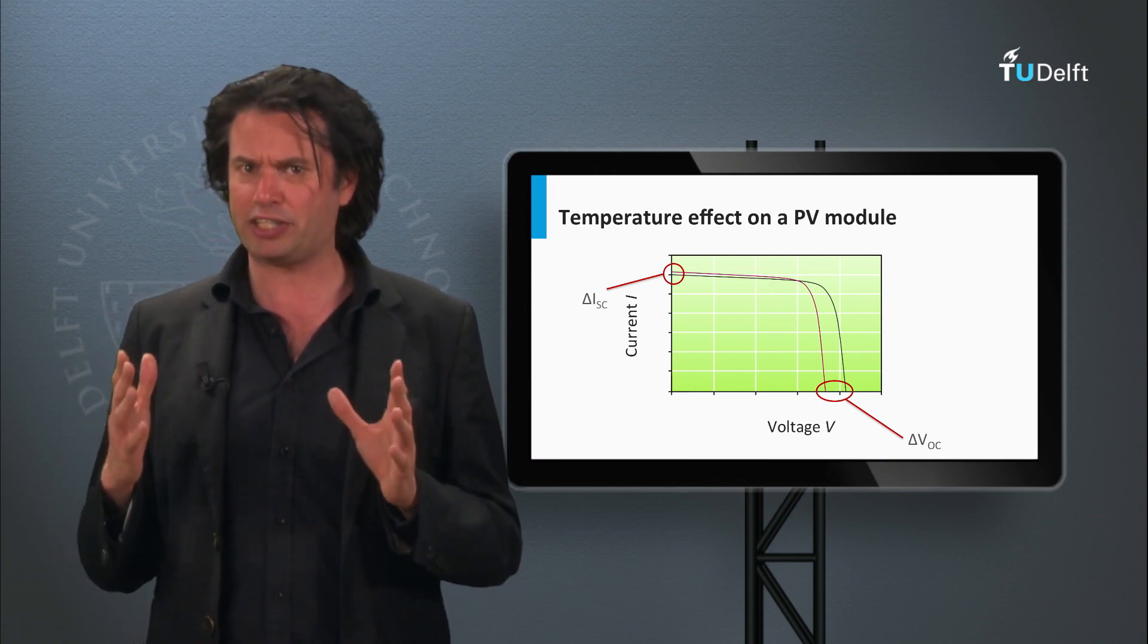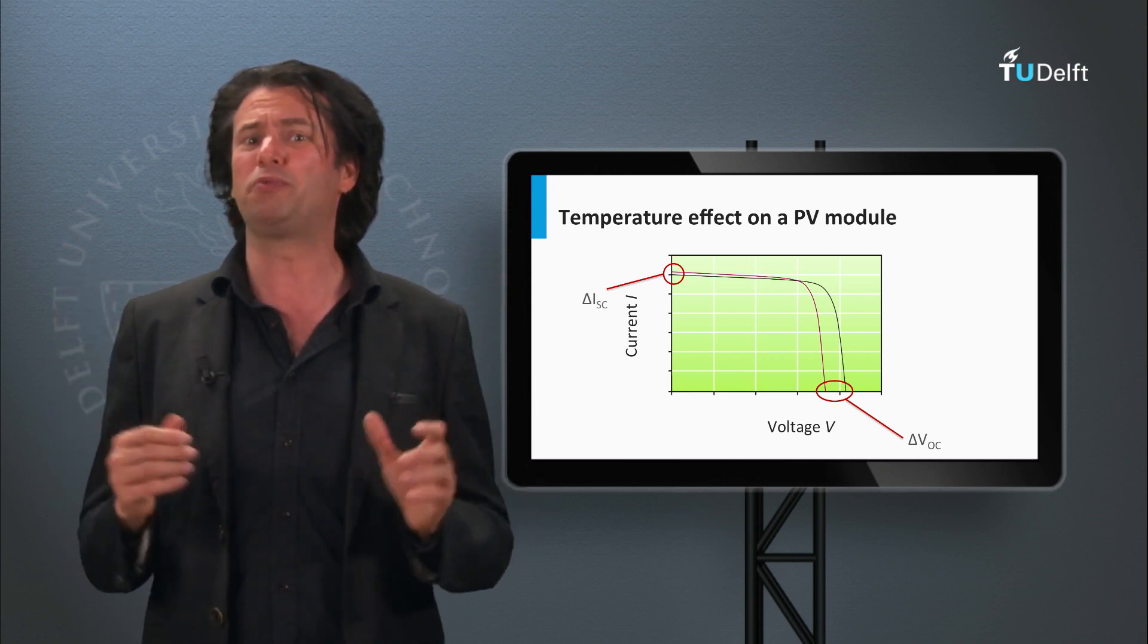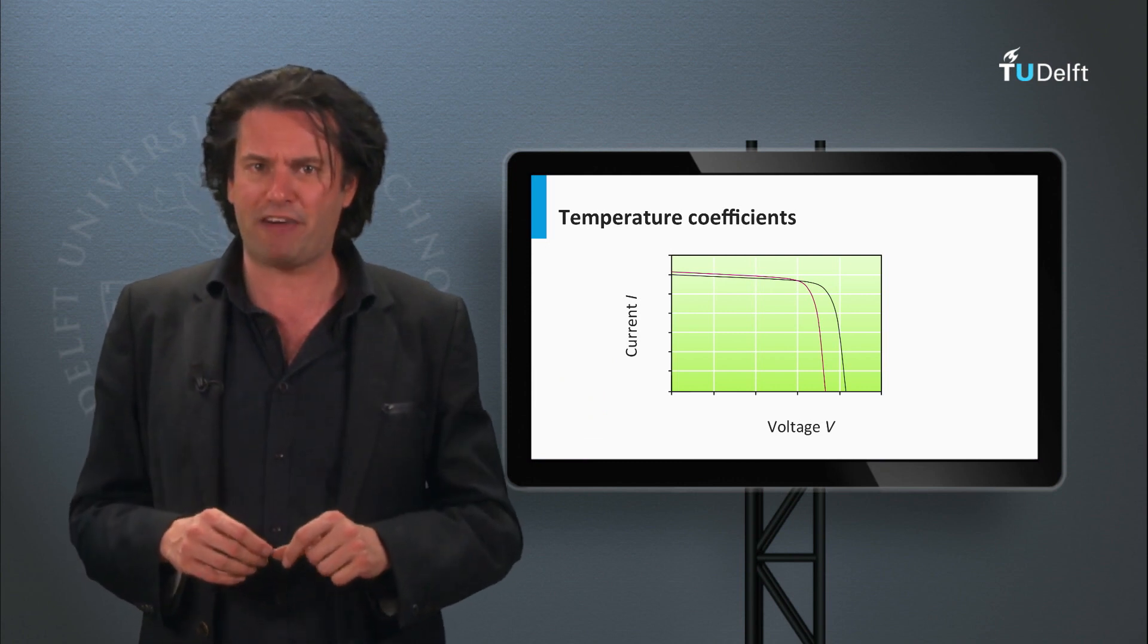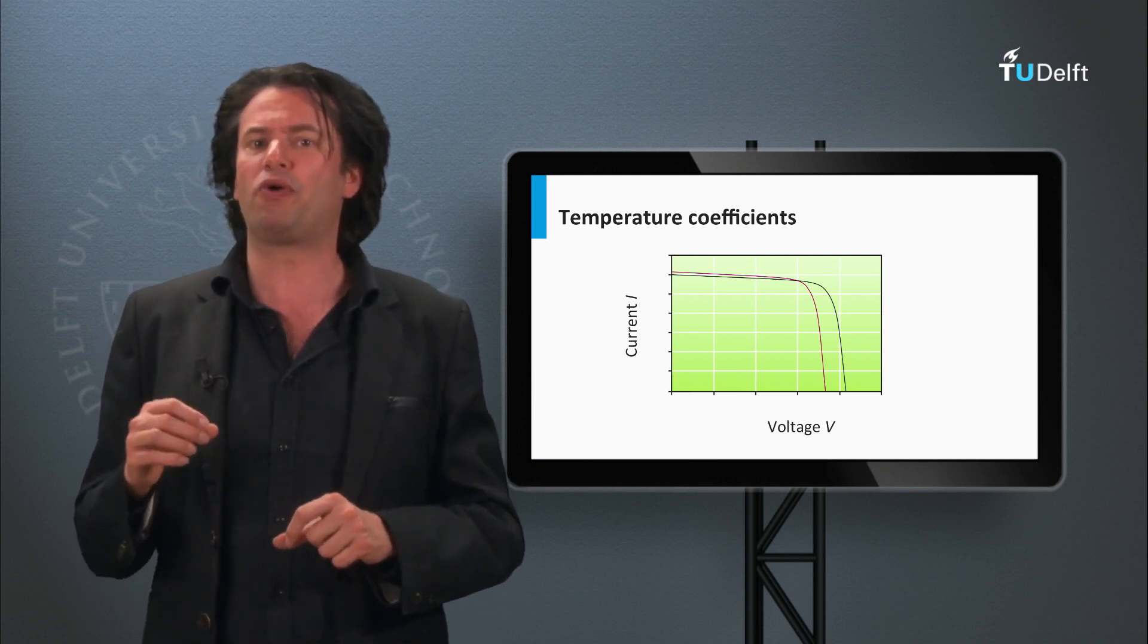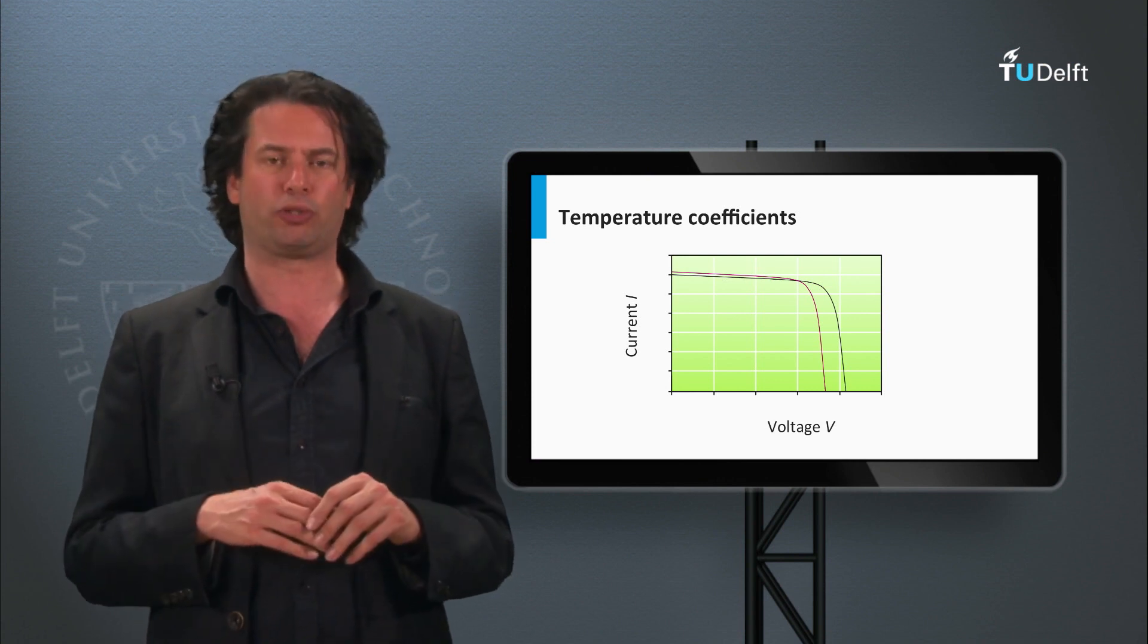If the temperature of the PV module were to increase by 10 degrees Celsius, how would the output be affected? Well, the PV module manufacturers include what are known as the temperature coefficients in the datasheets of the commercial modules.